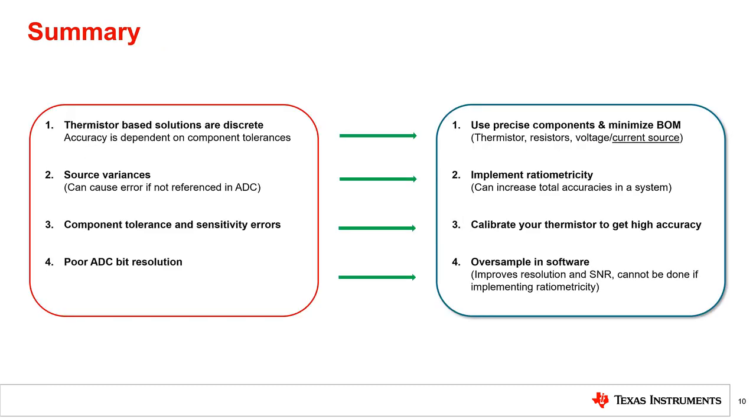To recap, thermistors are discrete devices rather than a more integrated type of temperature sensor. Because of this, they require extra design considerations to achieve higher levels of system accuracy. Since there are multiple sources of error in the circuit, we recommend using precise components and minimizing the bill of materials by using a constant current source rather than a voltage divider circuit. Because sources can vary independently, we recommend to implement the ratiometric approach with your ADC to sync up voltage variations. To get the best level of accuracy possible with thermistors, we recommend leveraging the simple room temperature offset correction with linear PTC thermistors.